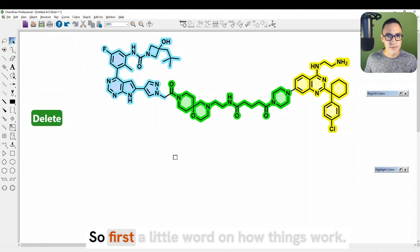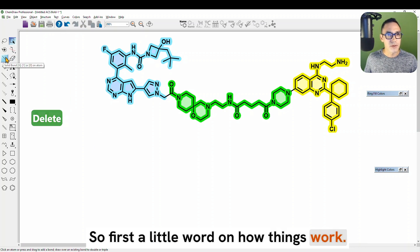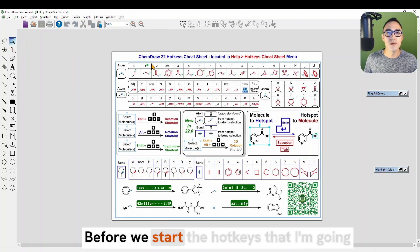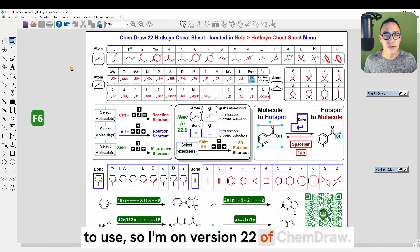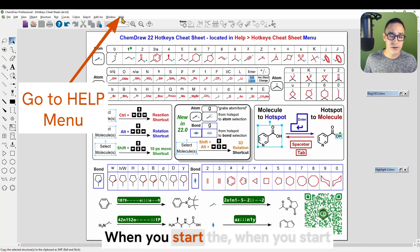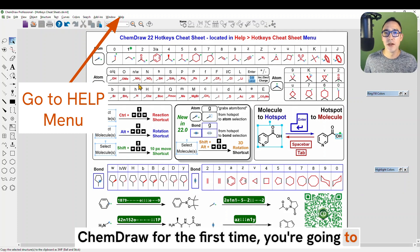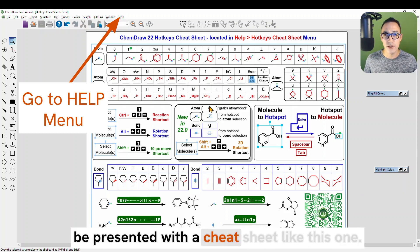That looked a little bit complicated, but we're going to see again from the start how to get to that. All right. So first, a little word of how things work. Before we start, the hotkeys that I'm going to use. So I'm on version 22 of ChemDraw. When you start ChemDraw for the first time, you're going to be presented with a cheat sheet like this one.